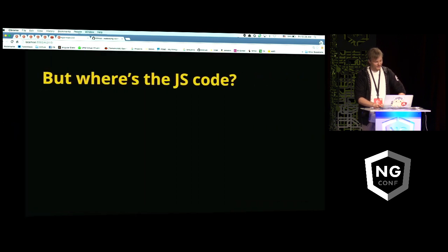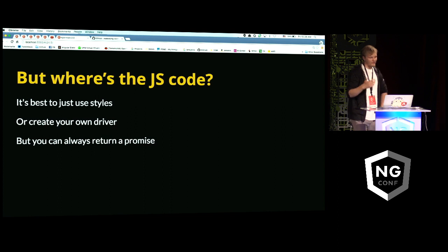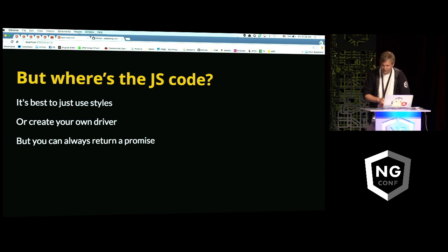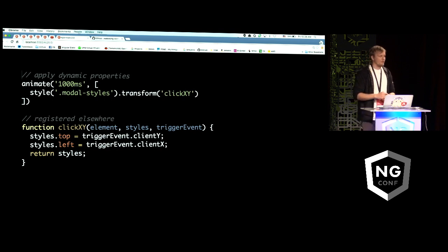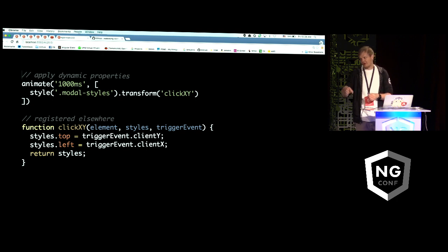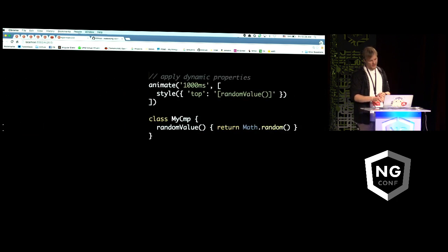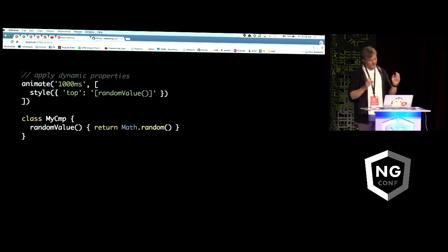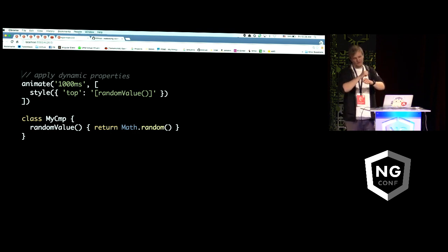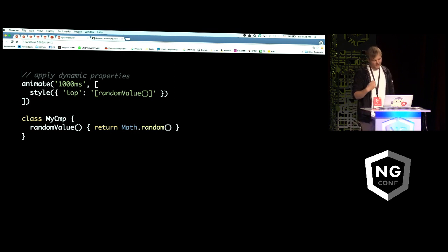You might be wondering what happened to all the JavaScript code — this is still CSS based, with JavaScript for the sequencing. The JavaScript code isn't entirely necessary with this API. If you want to have dynamic properties — for example, a modal that shows up on the page bound to X and Y coordinates — you can register a transformation function that figures out that dynamic styling and passes it directly into the animation. We also have plans to have component access so we can directly pull data from the component and pass it into the style and animation sequencing.